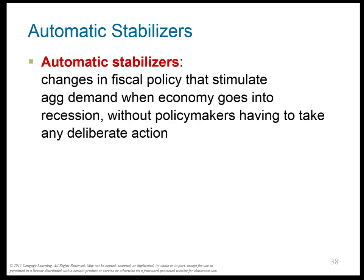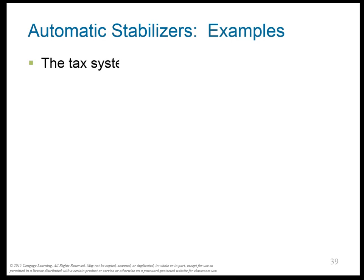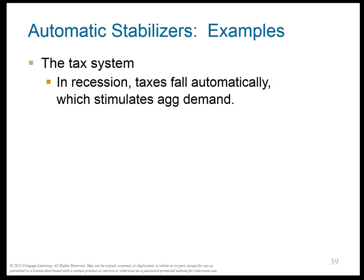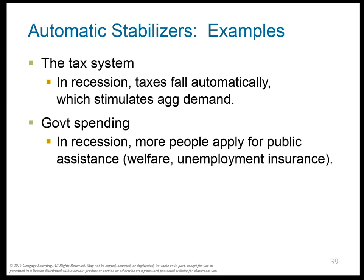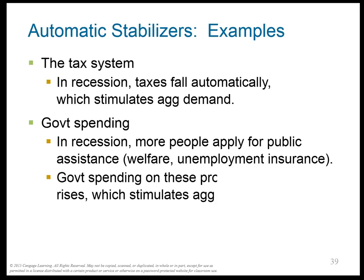Those opposed to discretionary stabilization also argue for automatic stabilizers — things that change fiscal policy to push the AD curve up without anyone having to take deliberate action. For example, the tax system: in a recession the AD curve shifts left, but taxes fall automatically because people are poorer — that's like a tax cut, so people consume more and the AD curve moves back right. Government spending works the same way: in a recession, people are poor so they apply for welfare or unemployment insurance, which gives them extra dollars, allowing them to spend more and increase C, pushing the AD curve to the right automatically, without any policymaker having to pass a law.